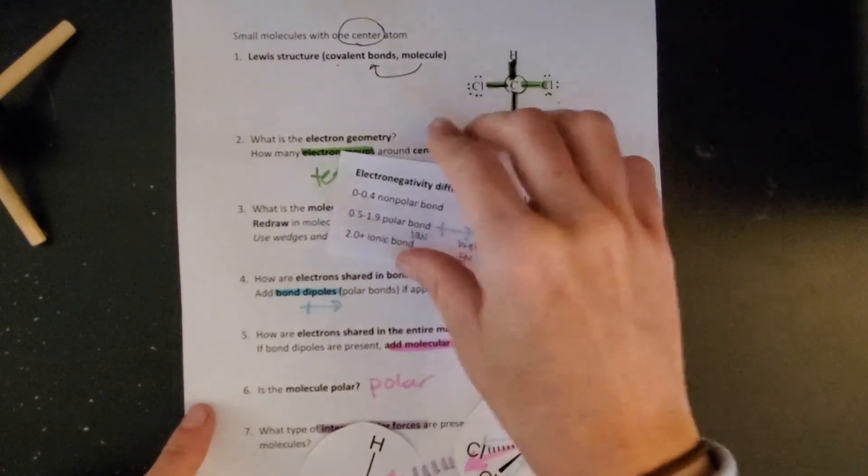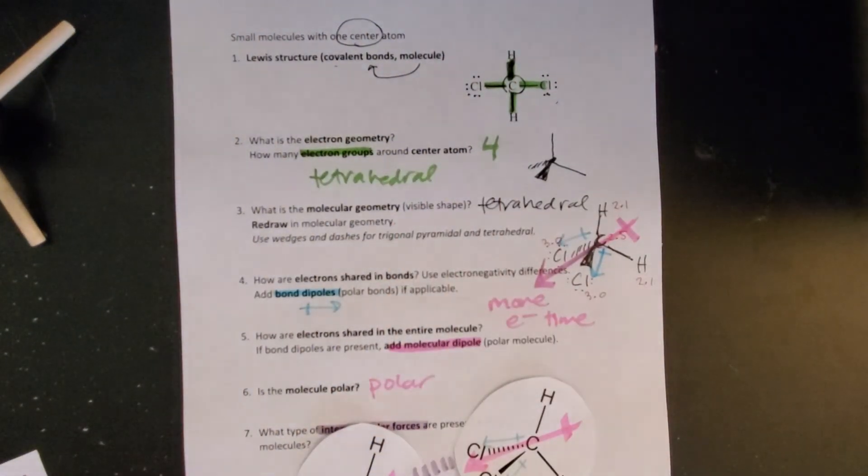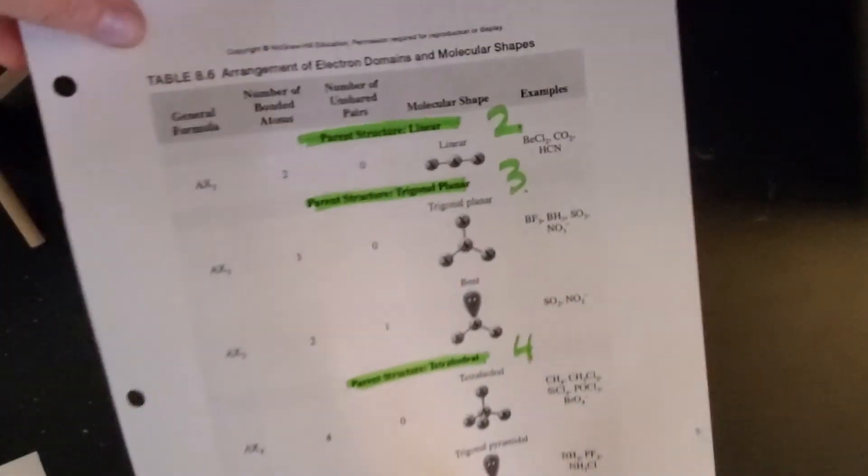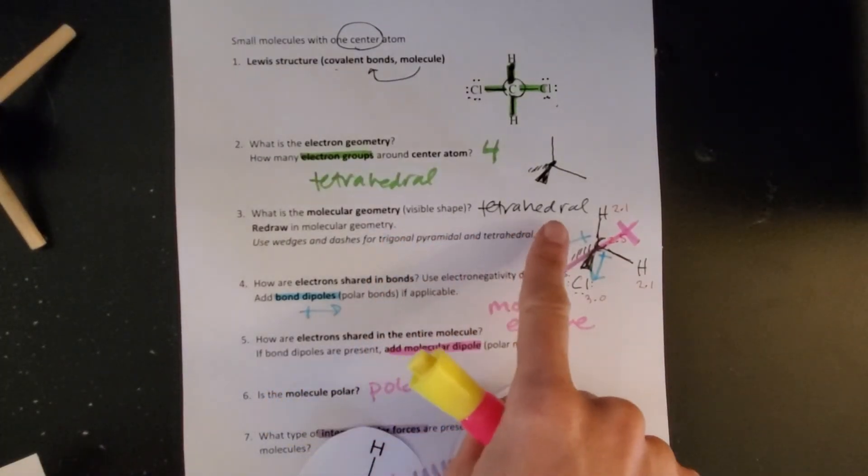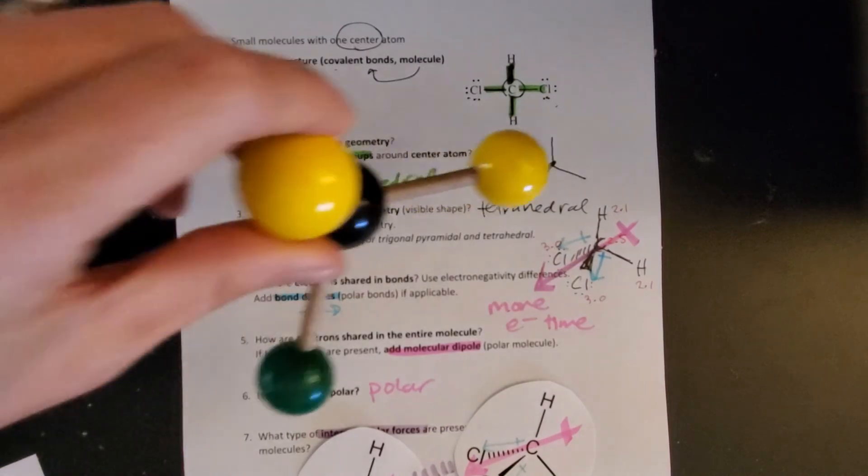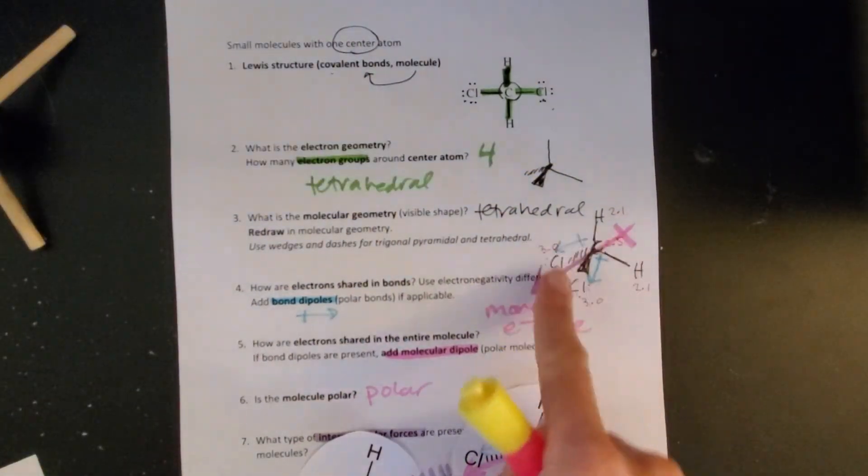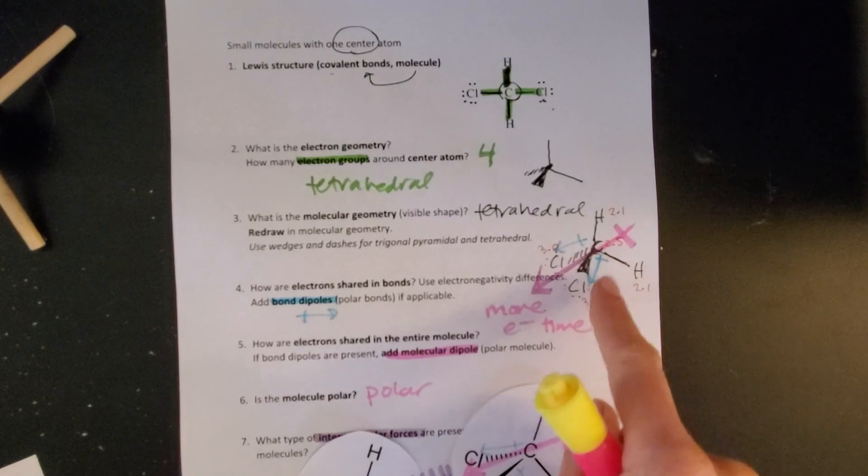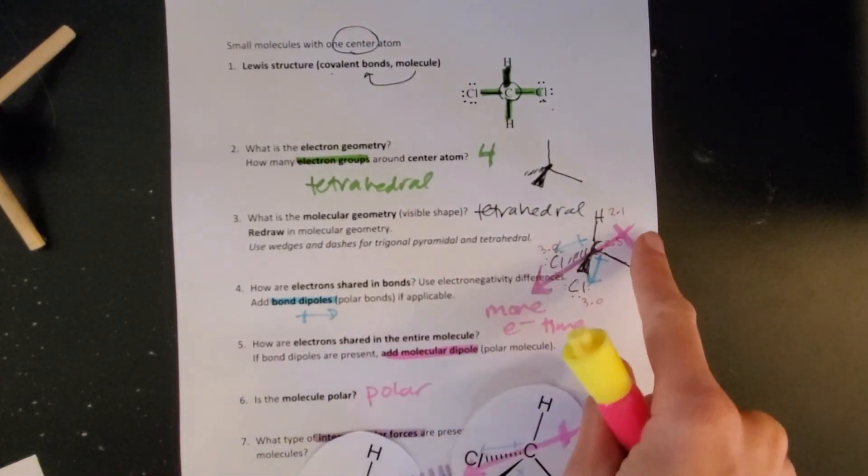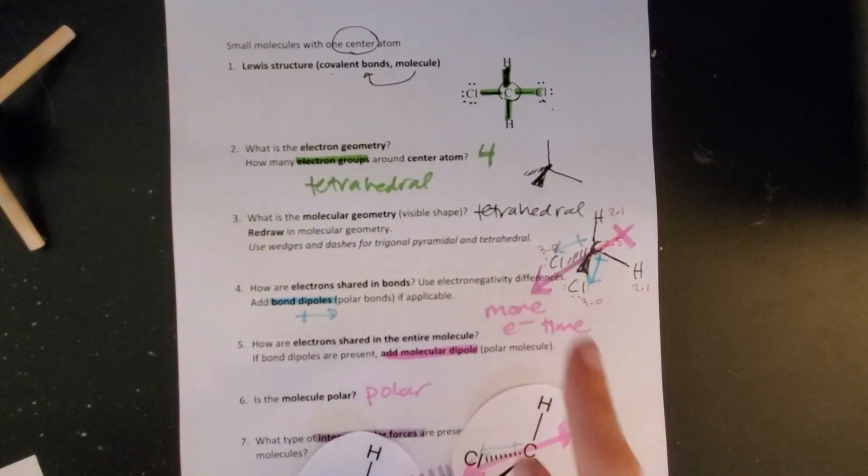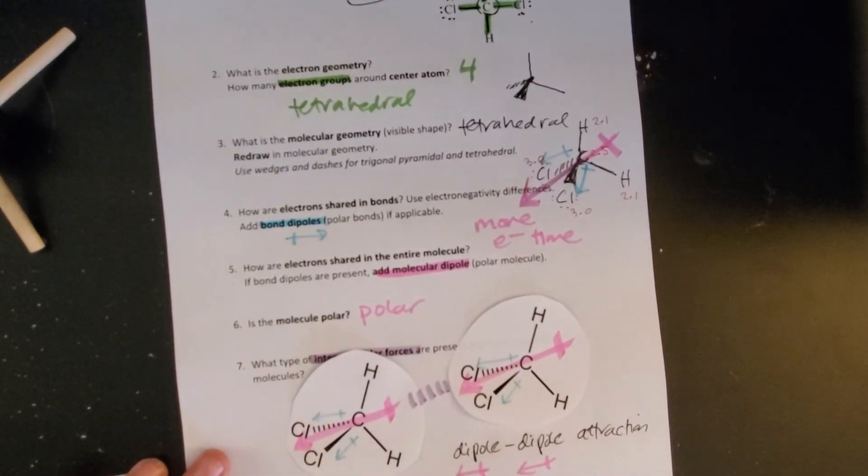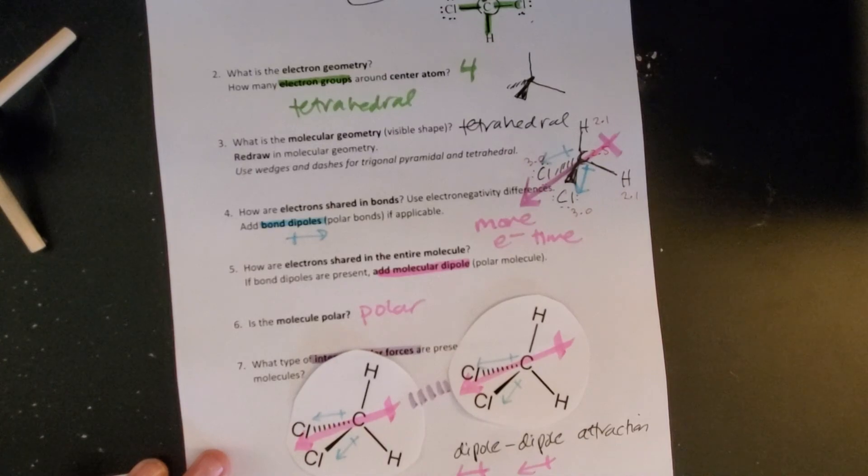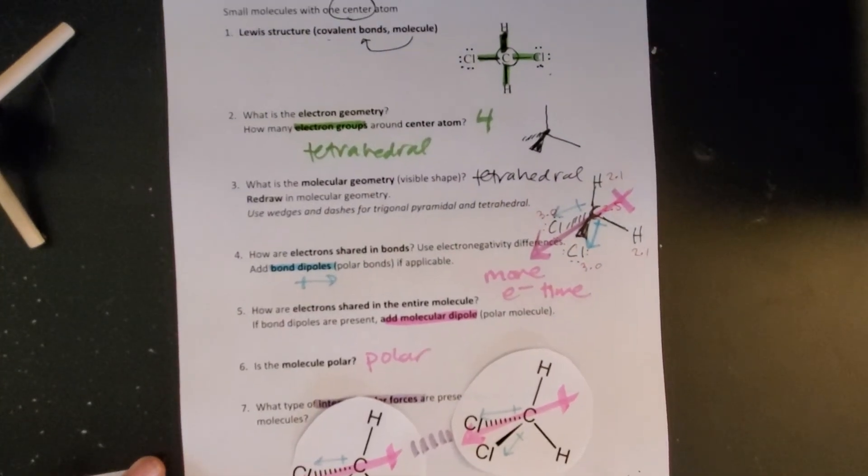So that takes us all the way from a Lewis structure finding the electron geometry, and remember we had three options for electron geometry, finding the molecular geometry of what that molecule actually looked like when I put atoms onto it, drawing that, figuring out the bond dipoles, figuring out if the electrons are uneven throughout the molecule it's polar, and then I can see how those attractions play out when I have two molecules. So hopefully that helps you see the big picture and work through these long problems.